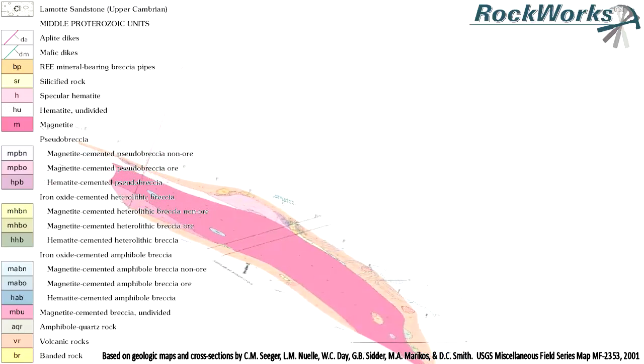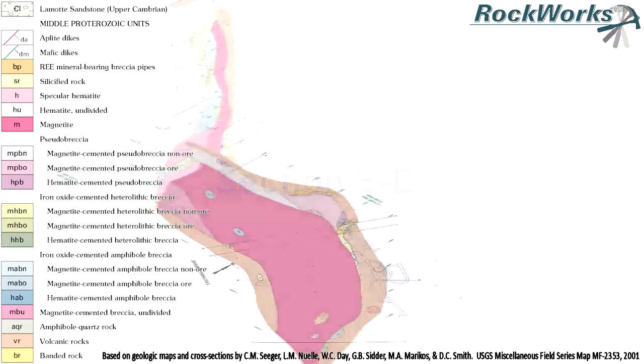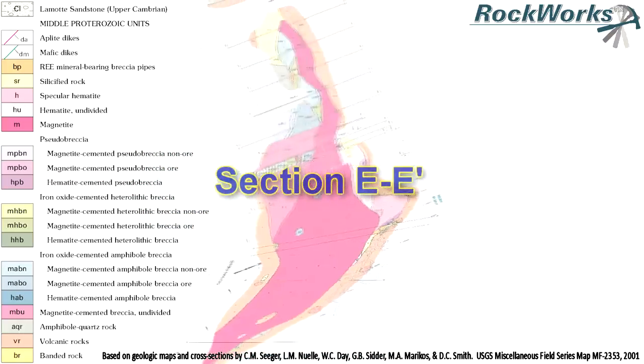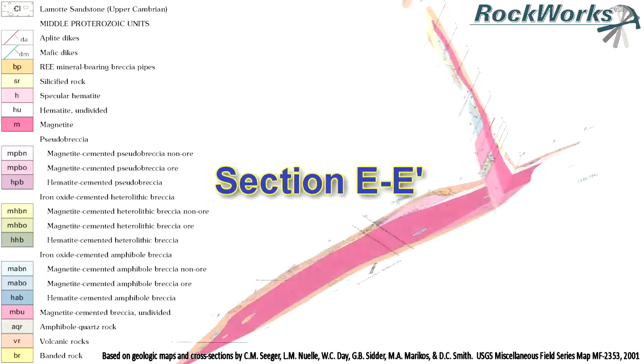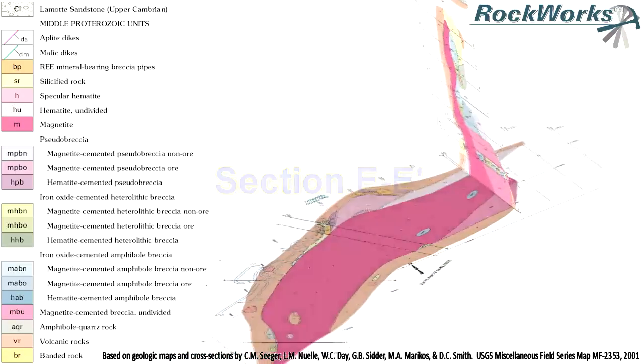Activating cross-section EE prime. The original CAD drawings were generated by the Doe Run Mining Company, the Missouri State Geological Survey, and the United States Geological Survey.